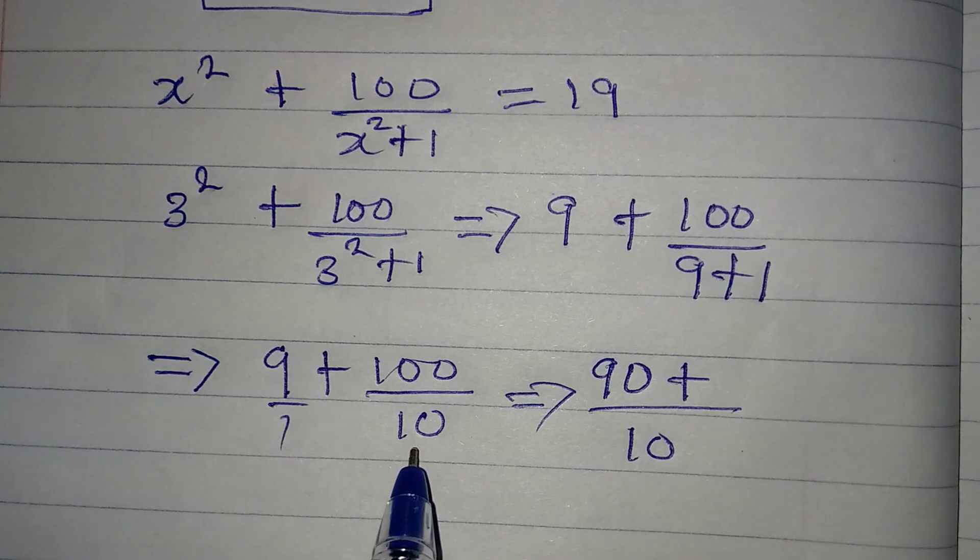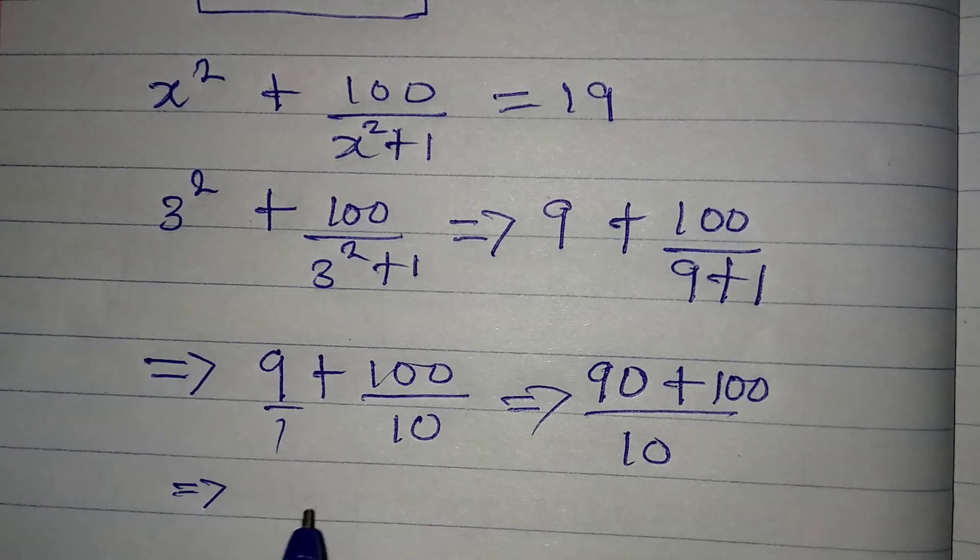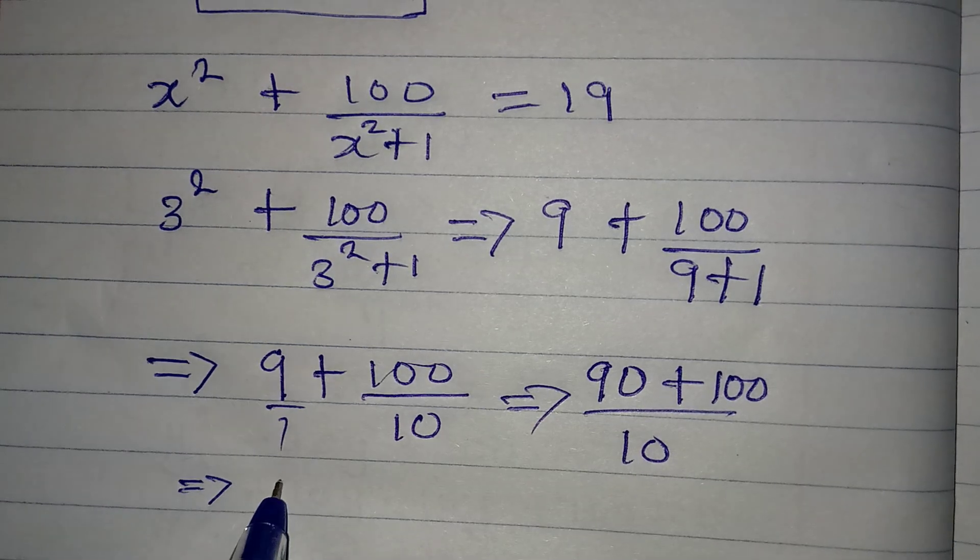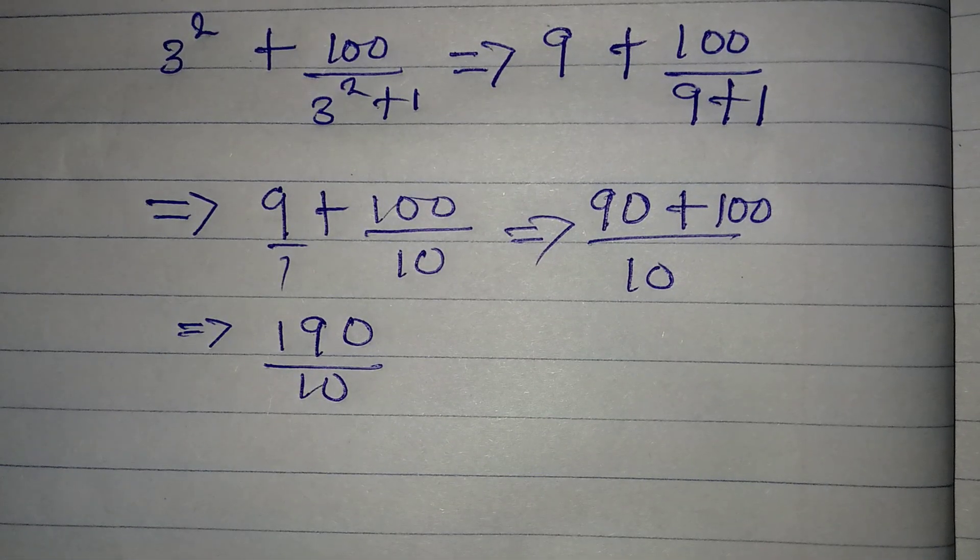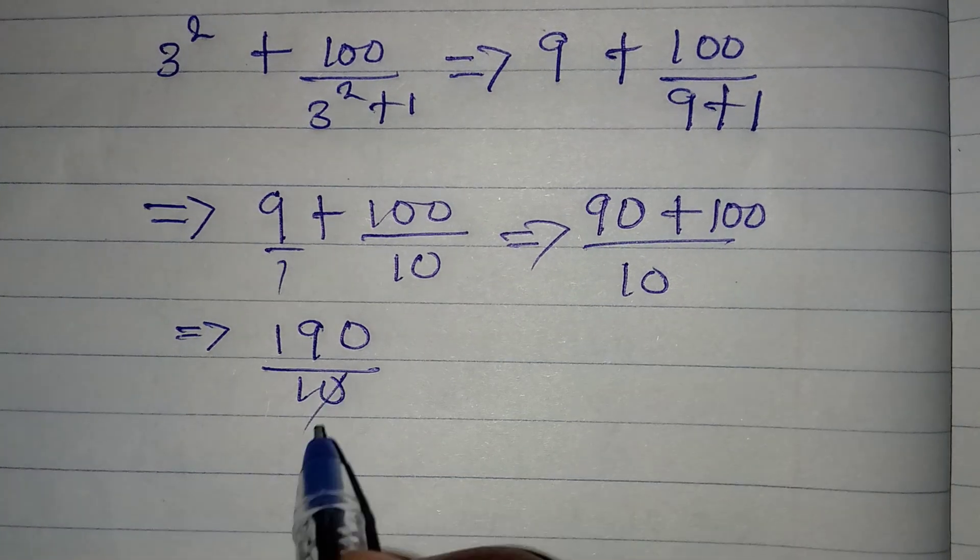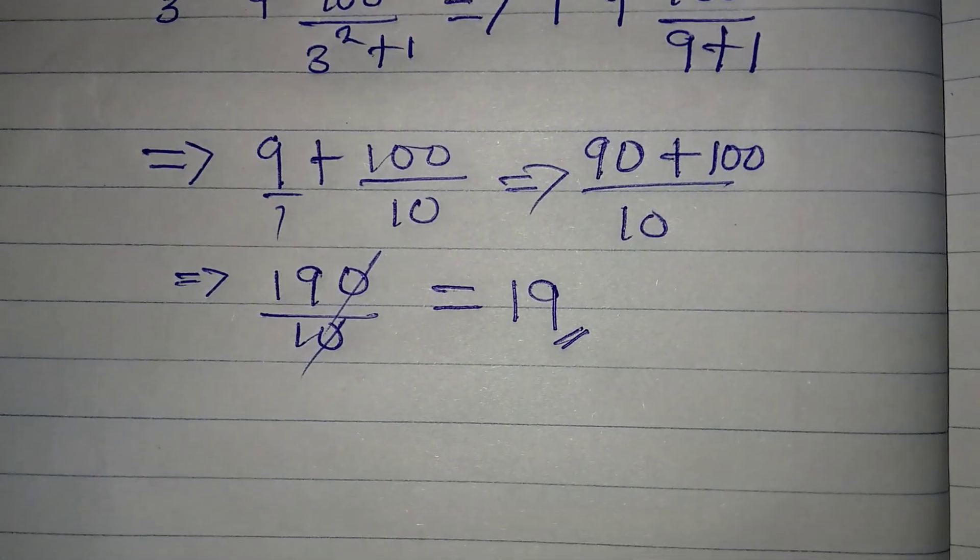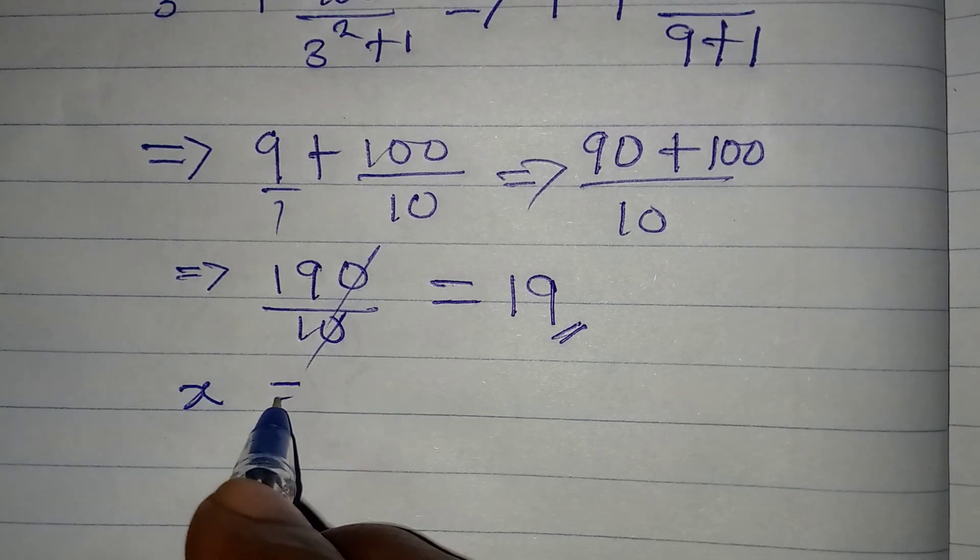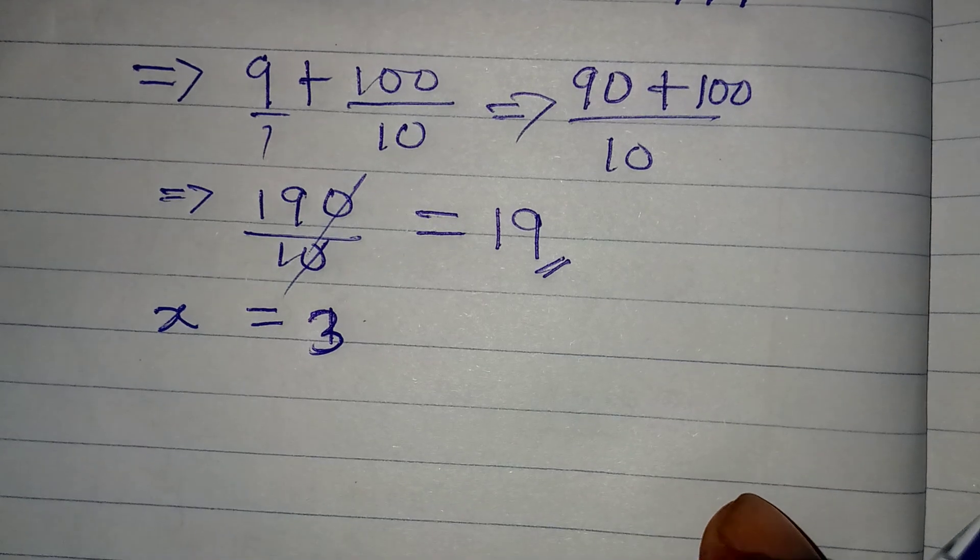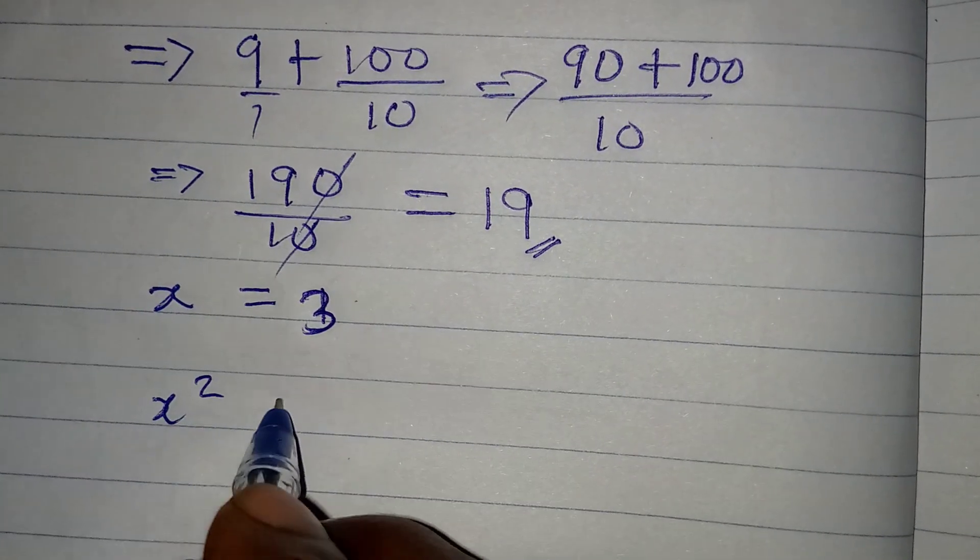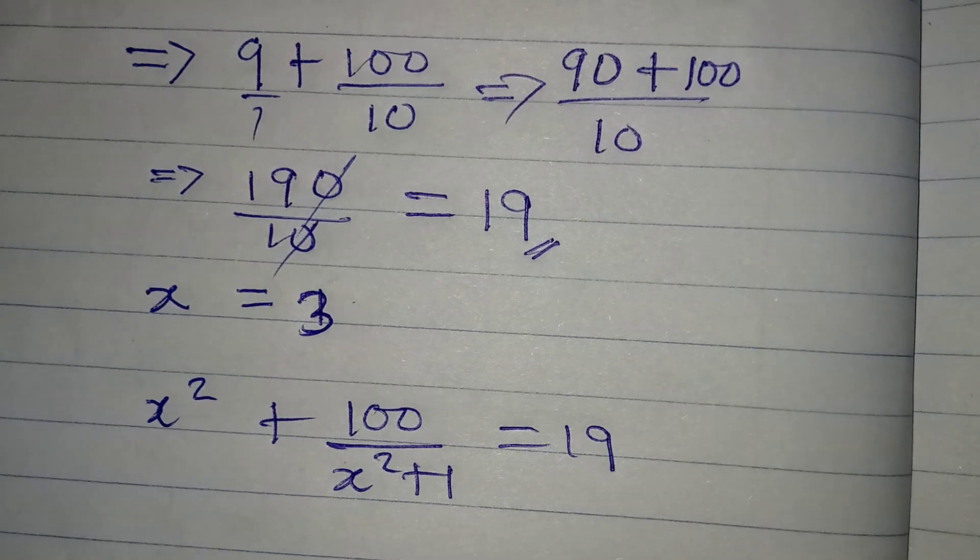And then this can go, and then we'll have 19 at the end of the day. But then what does this mean? This is a confirmation that x is equal to 3 satisfies the given equation.